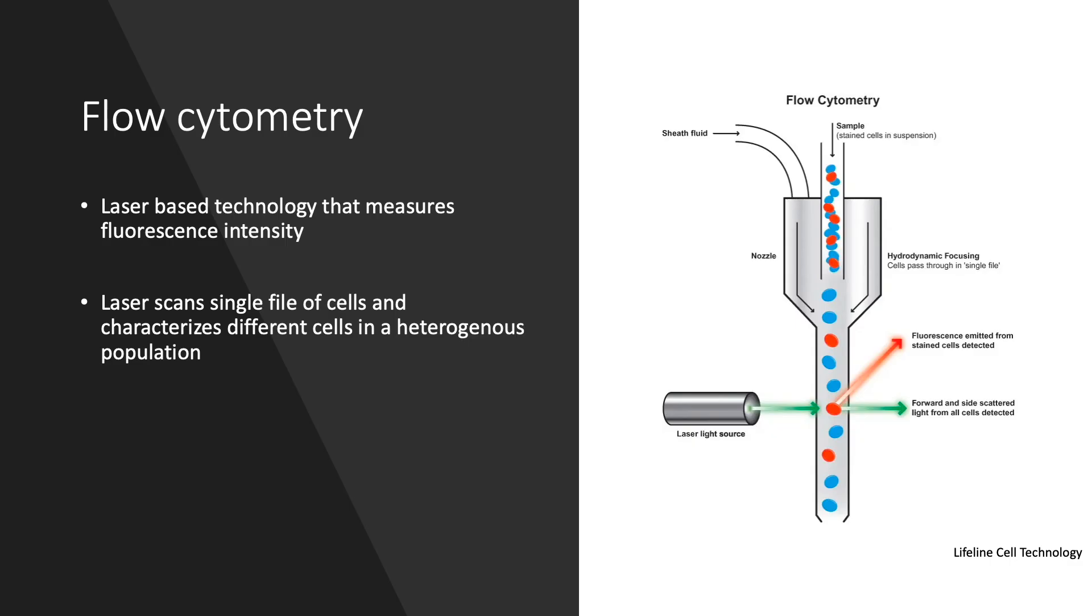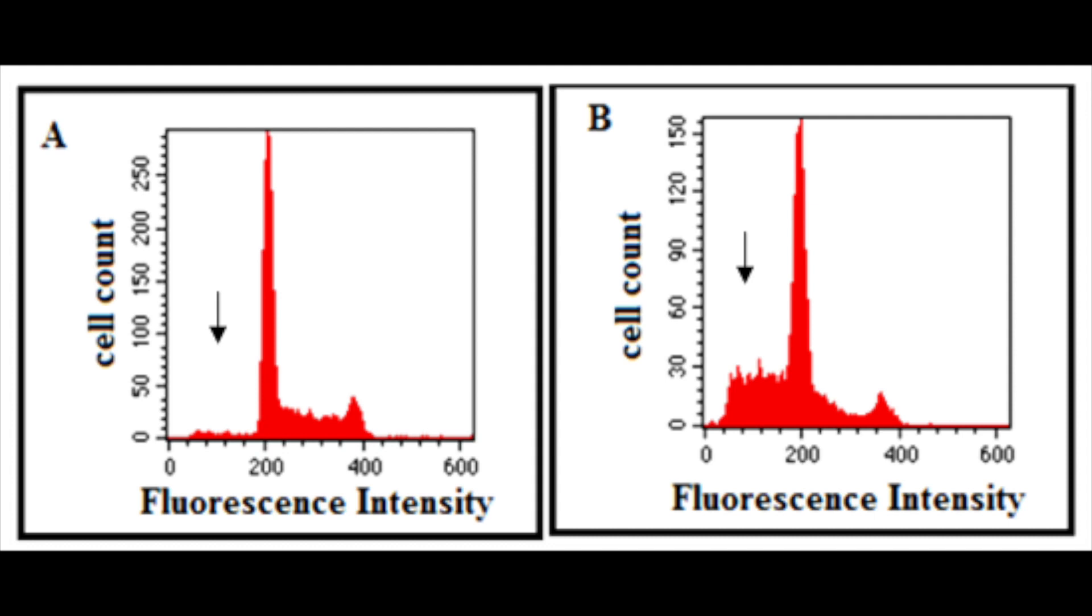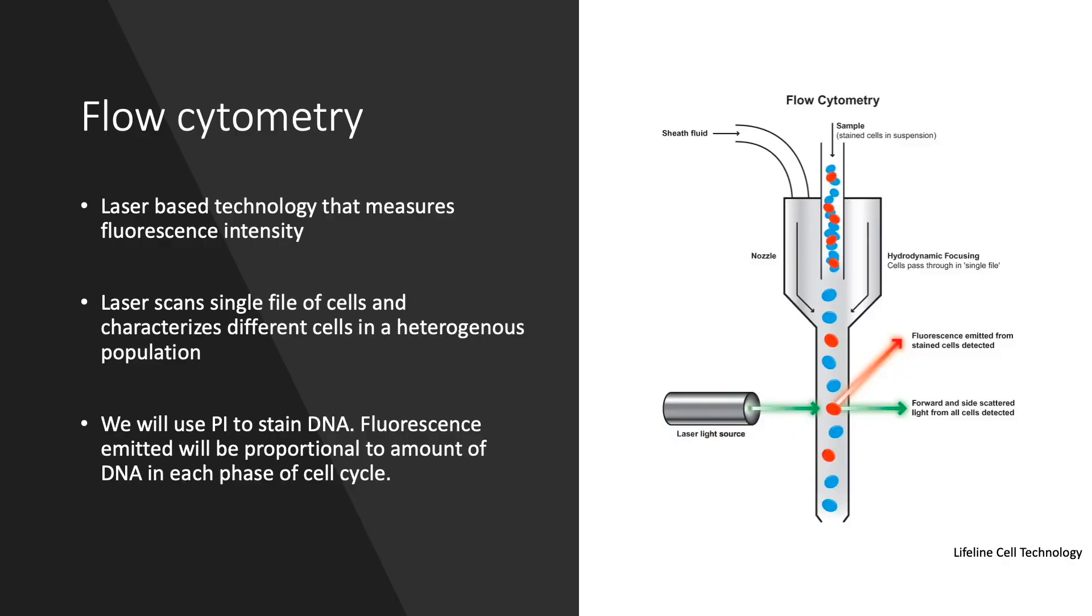For this assay, a DNA fluorescent dye is used. Once the dye binds to the DNA and is excited with a laser, it will emit a fluorescent signal. Since the dye binds to DNA proportionately, the amount of fluorescent signal is representative of the amount of DNA present. We will be working with a dye that you may be familiar with, propidium iodide.